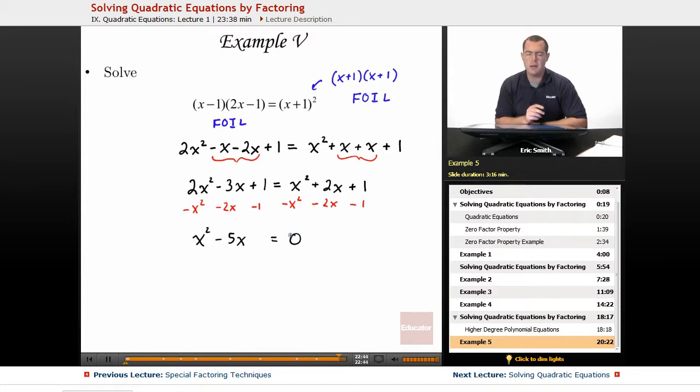And now this looks like a much nicer problem to solve. It even has a greatest common factor of x that I could take out from both of these terms. Now I can take each of these factors and set them equal to 0.